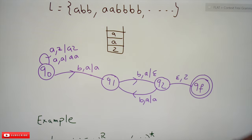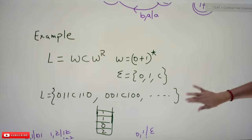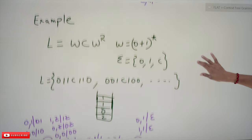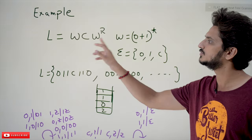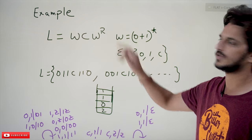After all the popping, if the input symbol is epsilon (string is over) and the stack top is Z, we move to the final state. We have written this pushdown automata based on final state acceptance logic.